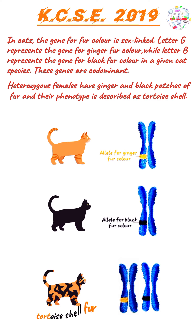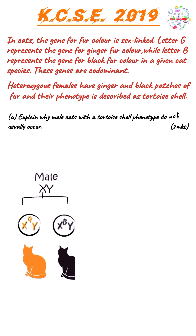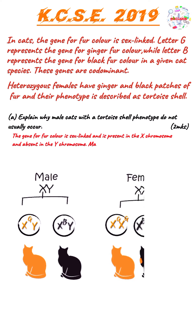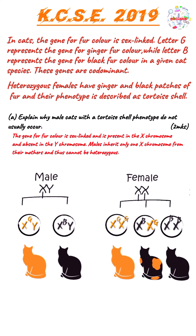Heterozygous females have ginger and black patches of fur, and their phenotype is described as tortoiseshell. This tells us that only female cats can have both alleles — one for ginger fur color and one for black fur color. This shows that these genes are only present on the X chromosome, not on the Y chromosome. Male cats have only one X chromosome and one Y chromosome, and can therefore never be heterozygous — they will only ever possess one of these alleles.